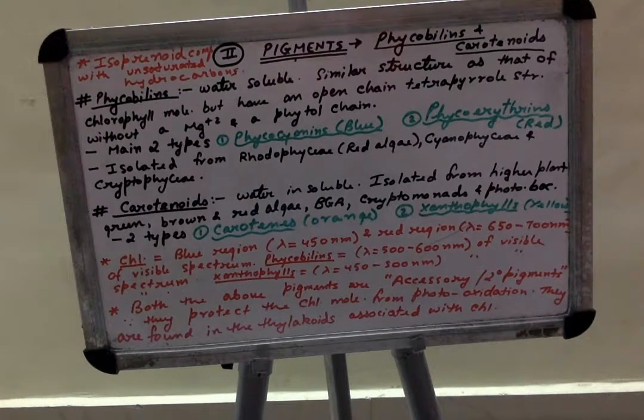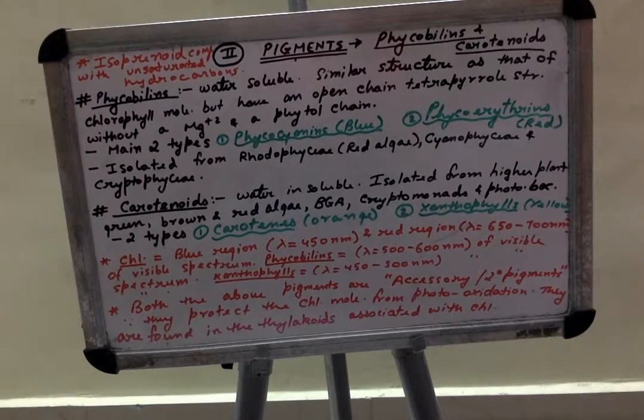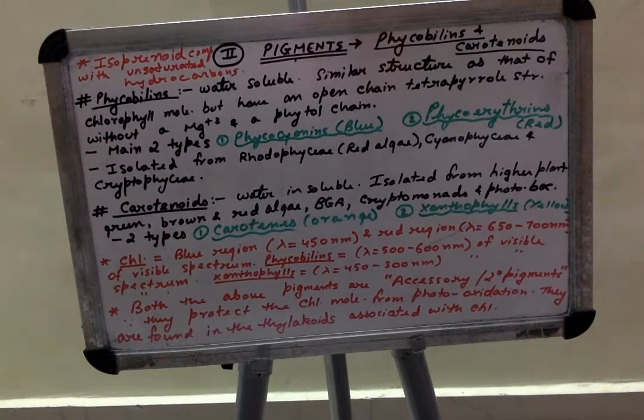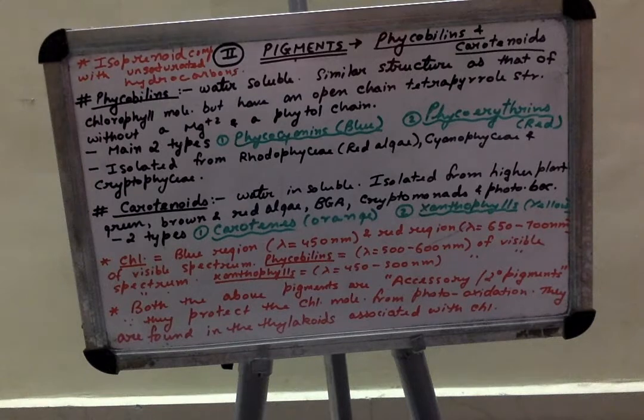So this is the end of the pigments present in chloroplasts. Now my further topics will focus mainly on the process of photosynthesis, light reaction, dark reaction, and a few more important points regarding photosynthesis. Thank you.